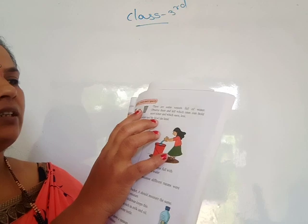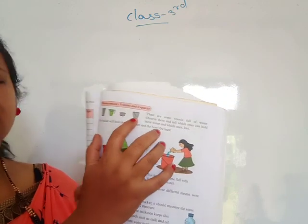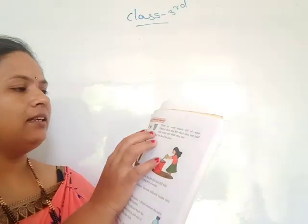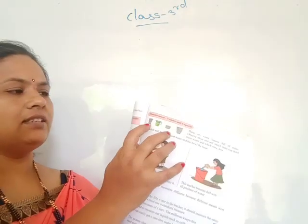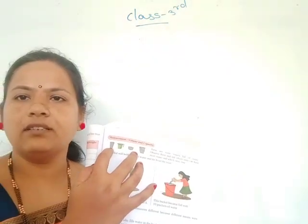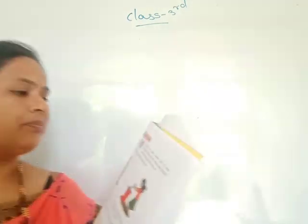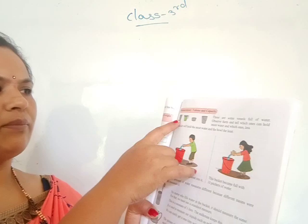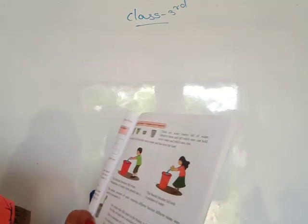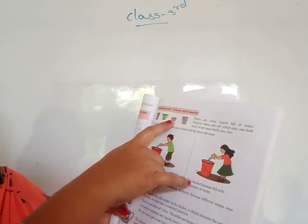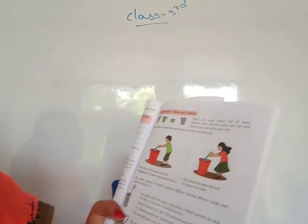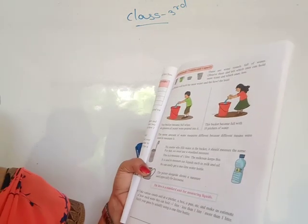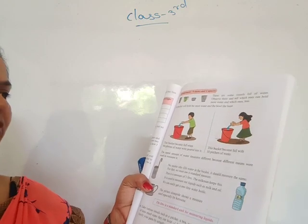See this here. This last vessel can hold more water, and this first vessel can hold less water. The bucket holds the most water, and this bowl is the least — see this picture.